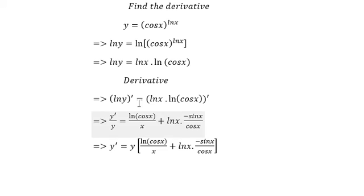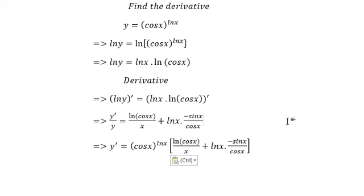We know that y equals cos x to the ln x. So we substitute this back into the equation to get the final result.